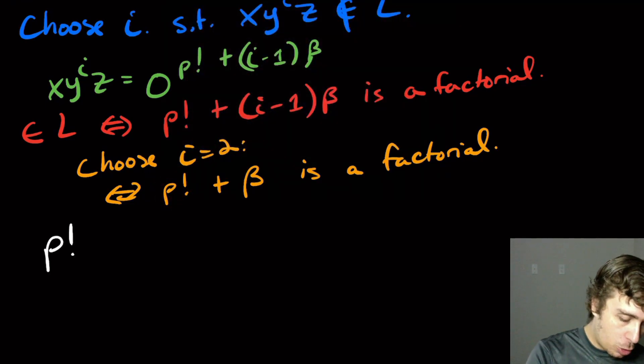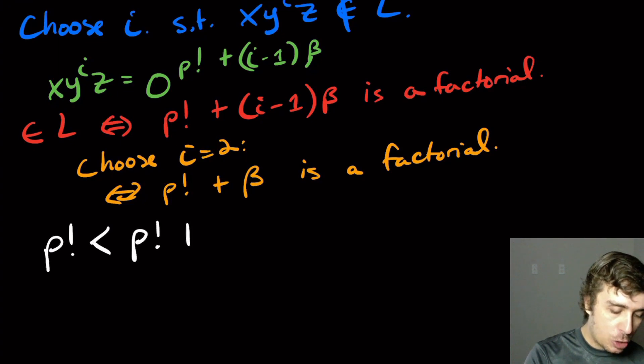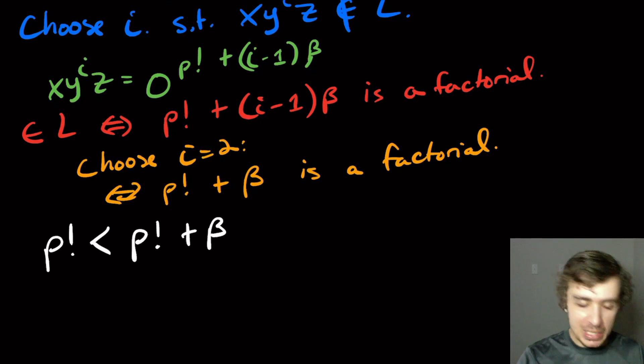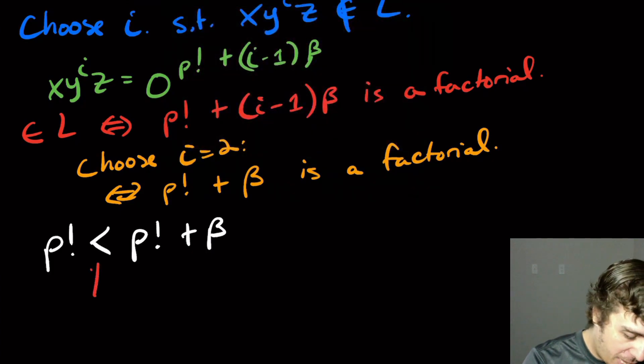So P factorial is strictly less than P factorial plus beta because beta is at least one.